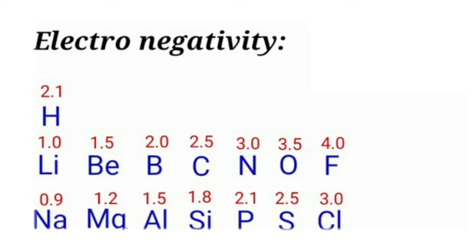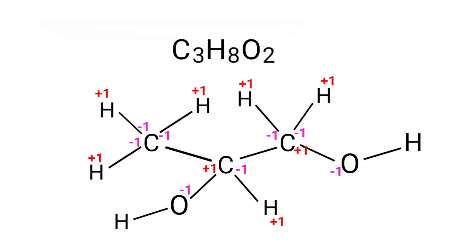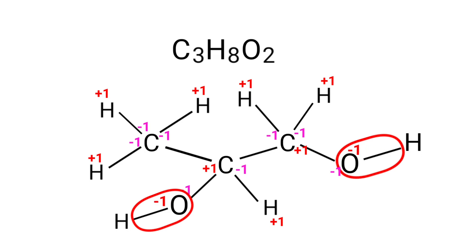As per the electronegativity chart, oxygen has more electronegativity than hydrogen. So in O-H bonds, the oxygen atoms take the bonds towards itself. Therefore the oxidation number of oxygen is -1 and the oxidation number of hydrogen is +1.